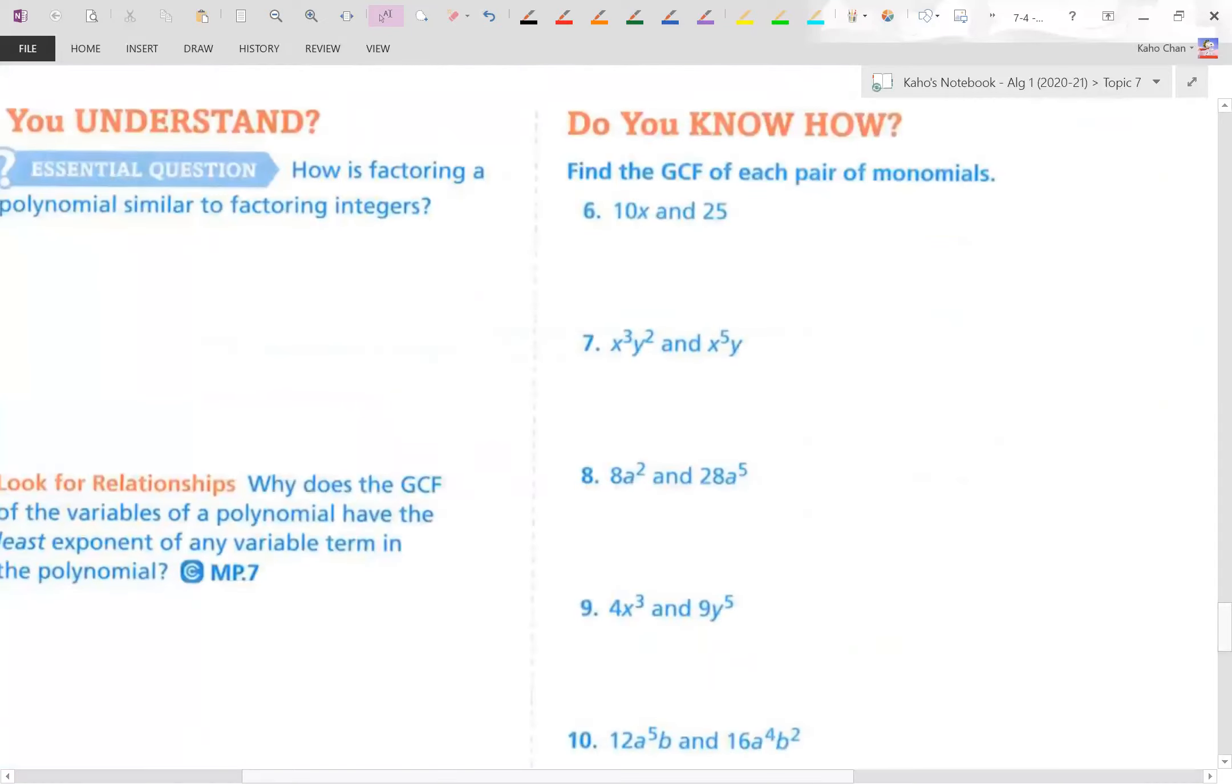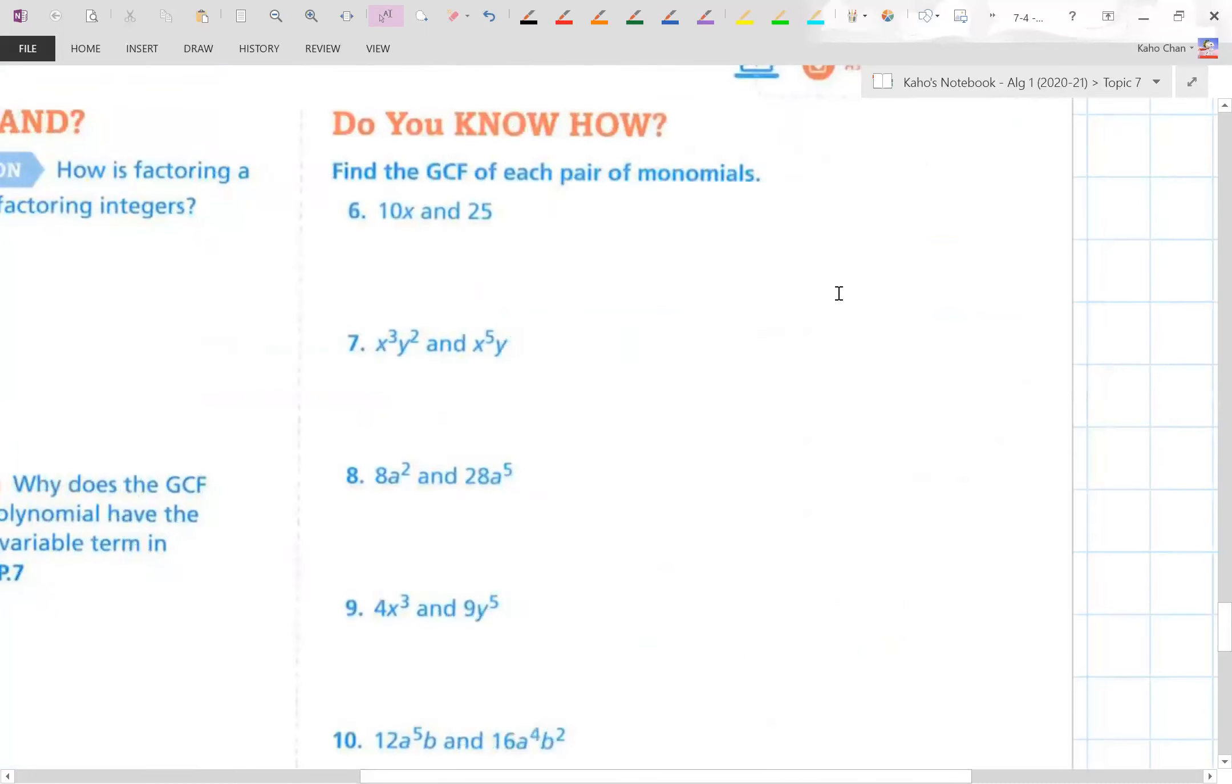We're just finding the greatest common factor, meaning we're finding a toy amongst the toy boxes. I mean, you're welcome to break them down. 10 is 2 and 5. 25 is 5 and 5. And of course we have an x right there. The only thing common amongst those two groups is the number 5. There it is. There's your GCF.